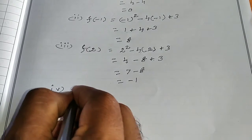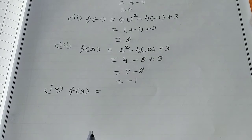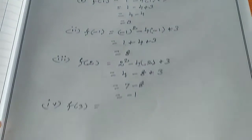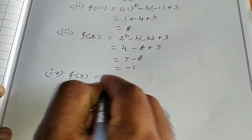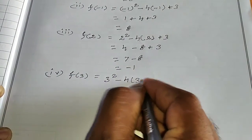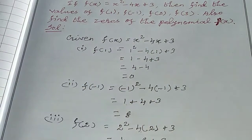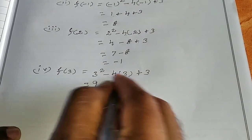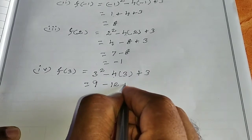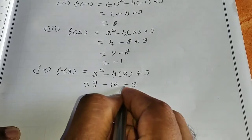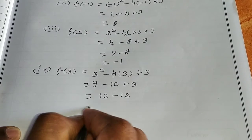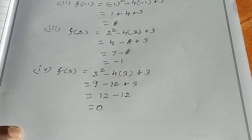Now find f(3). Apply x equals 3. f(3) = 3 squared minus 4 times 3 plus 3, which equals 9 minus 12 plus 3. Now 9 plus 3 is 12, and 12 minus 12 cancels, so f(3) = 0.